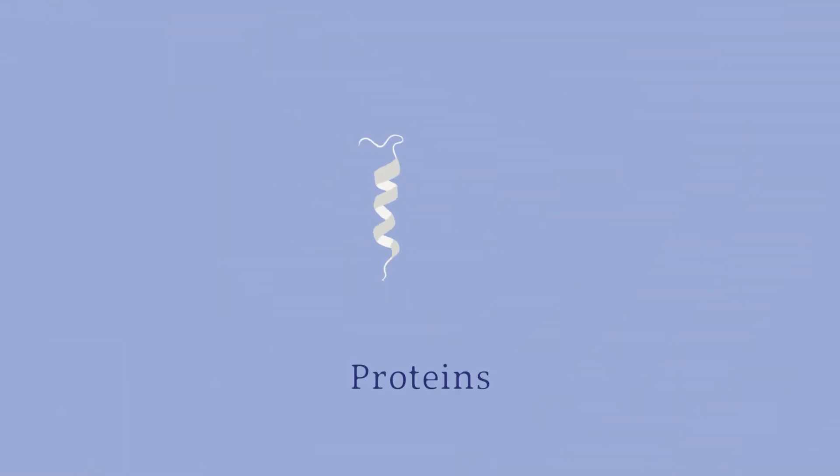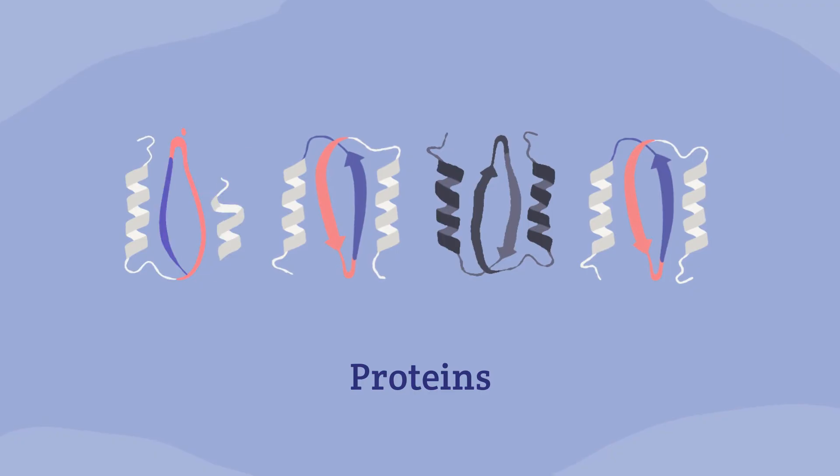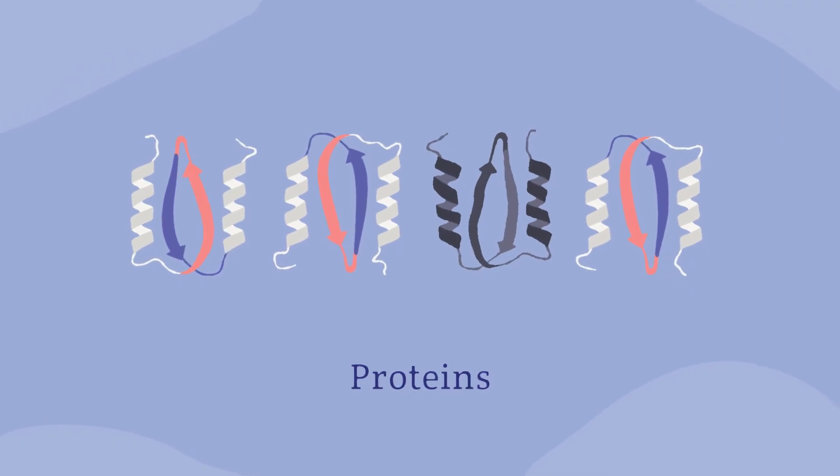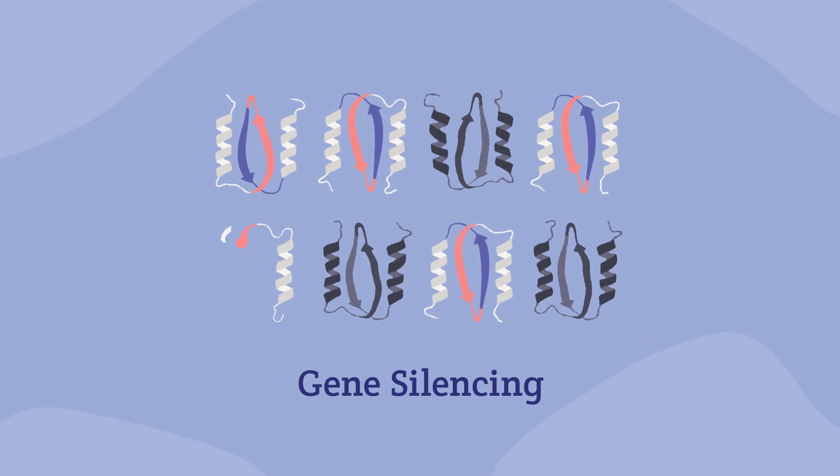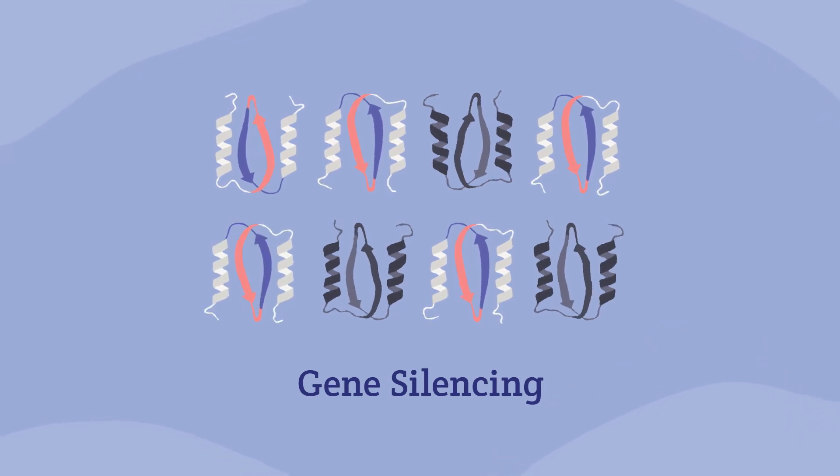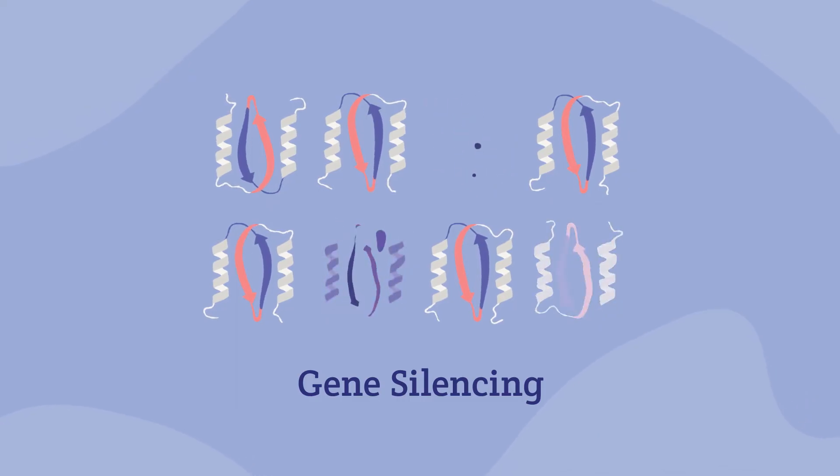However, sometimes gene variants may cause a protein to be made that has a toxic effect and leads to disease symptoms. In these cases, microRNA, interfering RNA, or ASO therapy can be used to silence the faulty gene, so the protein is not made.